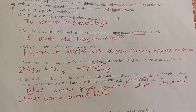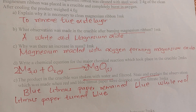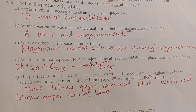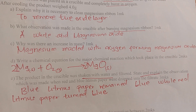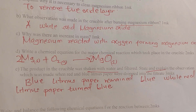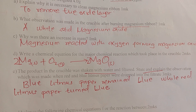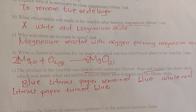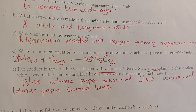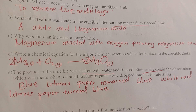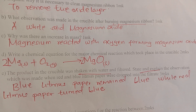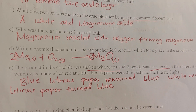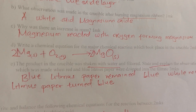The increase in mass occurred because magnesium reacted with oxygen to form magnesium oxide. The balanced chemical equation is: magnesium plus oxygen gives magnesium oxide. The product in the crucible was shaken with water and filtered. Blue litmus paper remained blue, while red litmus paper turned blue, because the solution is basic or alkaline — that is why it changes red litmus to blue.